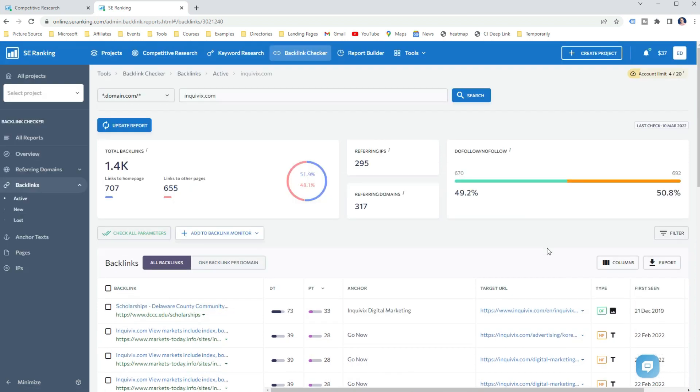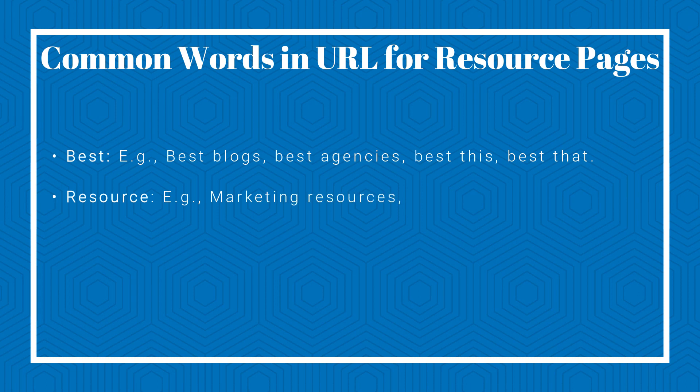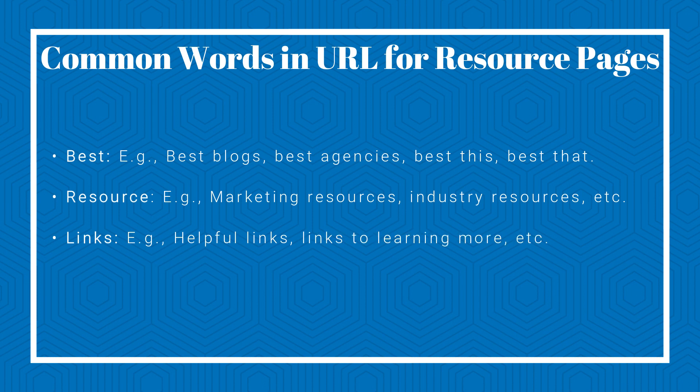Step 4: Find backlink opportunities. Once you have the backlinks report open, you can start searching for backlink opportunities. Just scrolling through the list is not efficient, so knowing what kinds of backlinks you are searching for will help you narrow down the list. In this example, I'm searching for resource link building, so I use the filter to narrow down my search. For resource link building, there are common words in the URL that indicate a resource page — for example: 'best' (best blogs, best agencies), 'resource' (marketing resources, industry resources), and 'links' (helpful links, links to learning more).